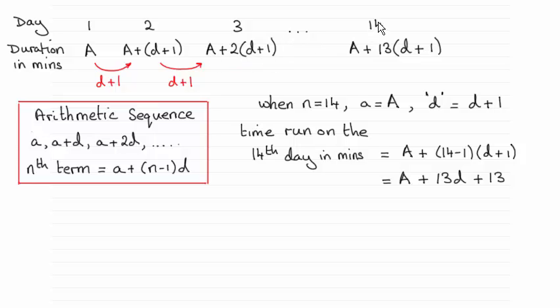So therefore on the 14th day, you'll notice it's got to be a plus 13 lots of d plus 1. This value here is always one less than the one you've got here. So that's one way that you could possibly show that when you expand this, you end up with this result.